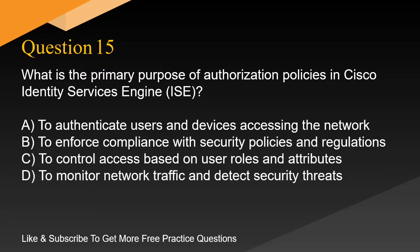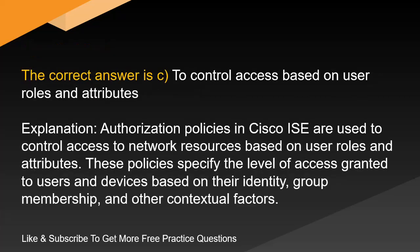Question 15. What is the primary purpose of authorization policies in Cisco Identity Services Engine? A. To authenticate users and devices accessing the network. B. To enforce compliance with security policies and regulations. C. To control access based on user roles and attributes. D. To monitor network traffic and detect security threats. The correct answer is C. To control access based on user roles and attributes.